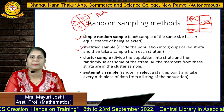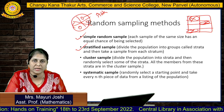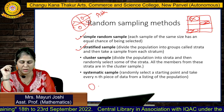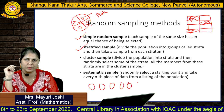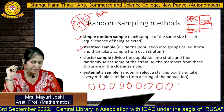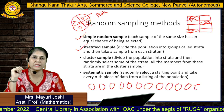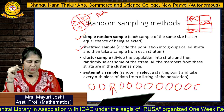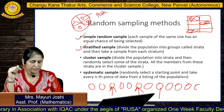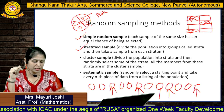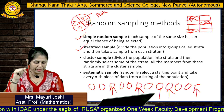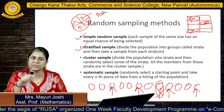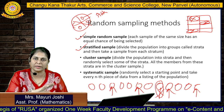Systematic sampling means selecting every nth element from the population. For example, if we select every third element, then the first, fourth, seventh positions and so on are selected in the sample. An element at the second position is not selected because it is not at the third place.